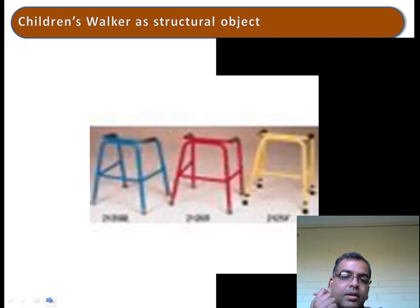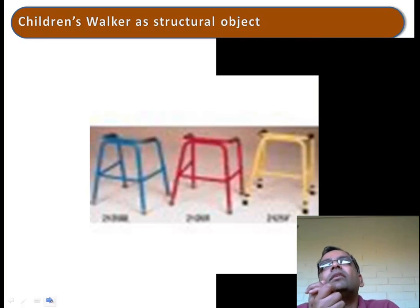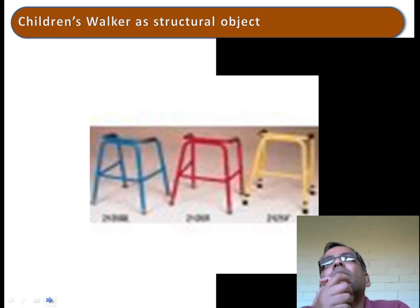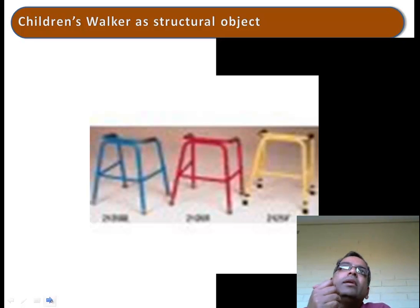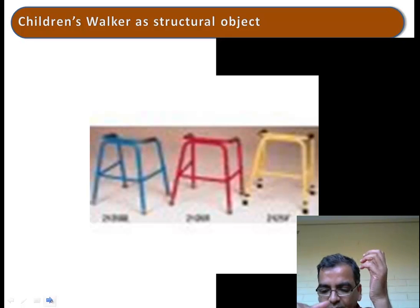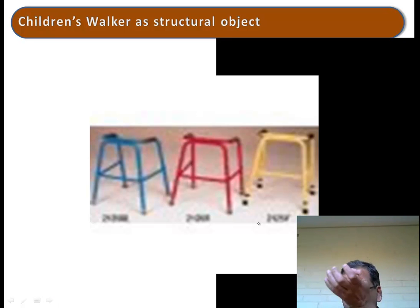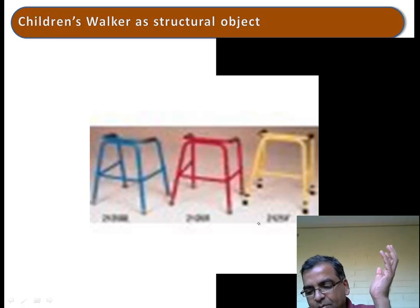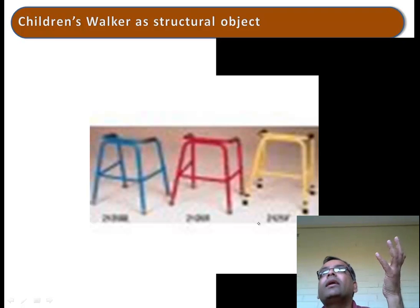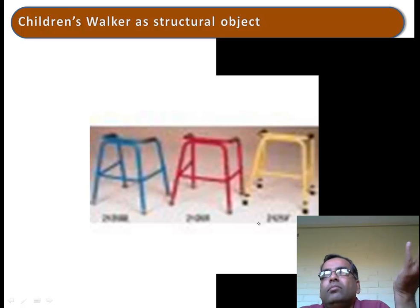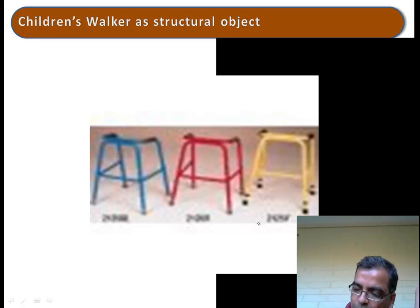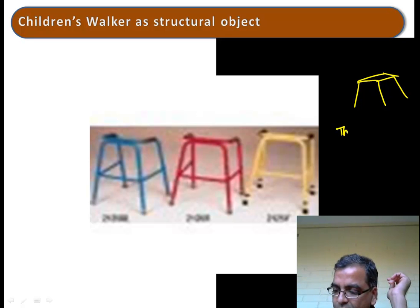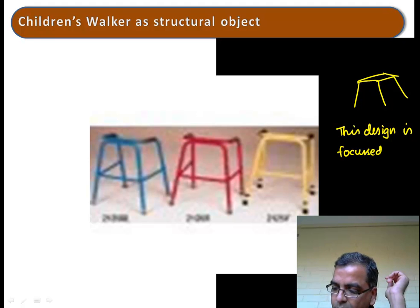Let me give you another example. The task was to build a children's walker for paraplegic children or those with cerebral palsy. You look at it and ask, what is the need? You want something to support some weight. So what you do is build something that looks like a chair — a truss or a frame — because if you want to bear a load, a truss or frame is the obvious structure. But this design is focused on stuff.